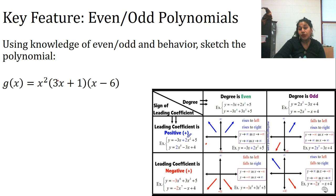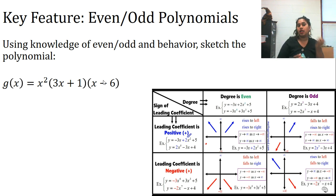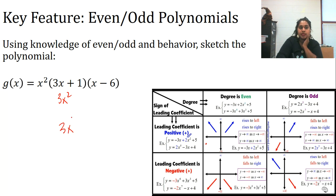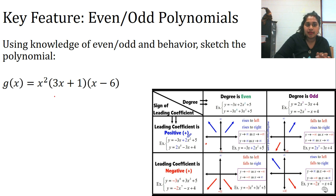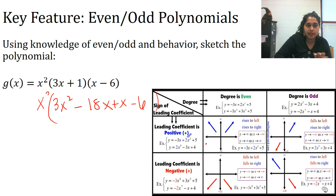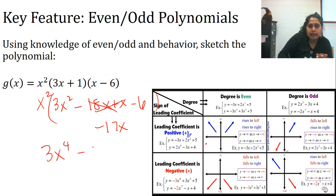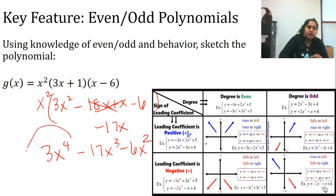For this one, I may have to factor it out, or I can reason that 3x · x² = 3x³ and 3x³ · x = 3x⁴ — so the leading term will be 3x⁴. Factoring fully: 3x(x² - 6x - 1)(x - 6) gives 3x⁴ - 17x³ - 6x². So my largest degree is 4, still my leading term.